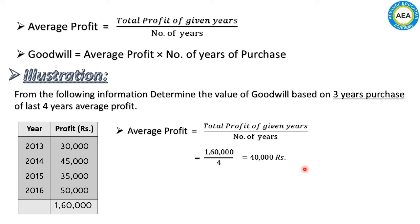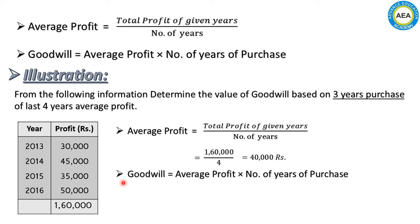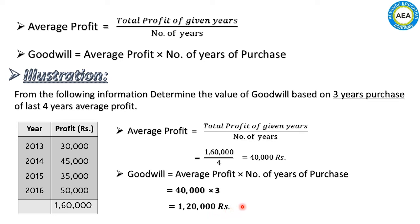We have found the average profit as ₹40,000. Now we find goodwill. Goodwill = Average Profit × Number of Years of Purchase = ₹40,000 × 3 = ₹1,20,000.